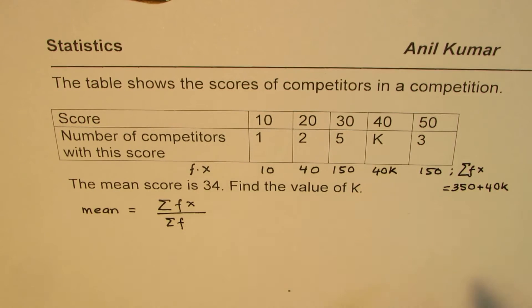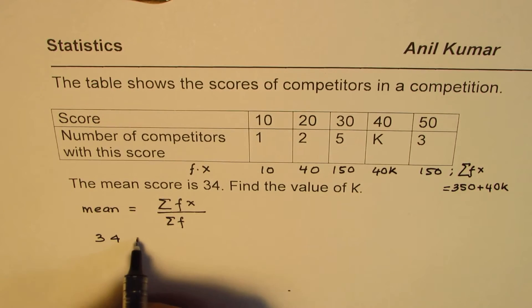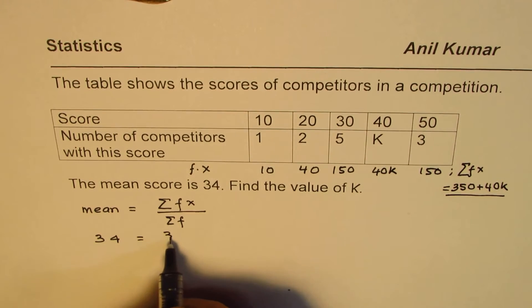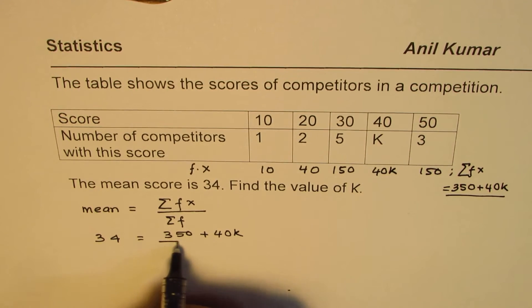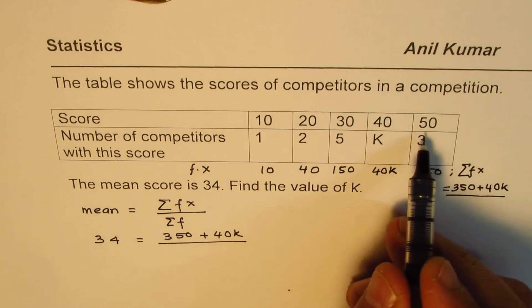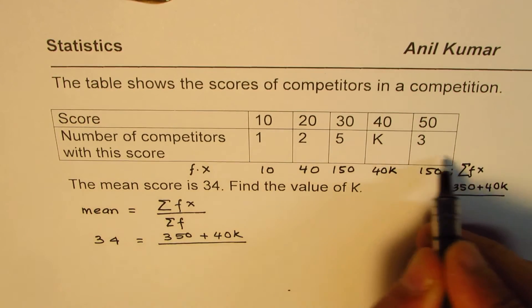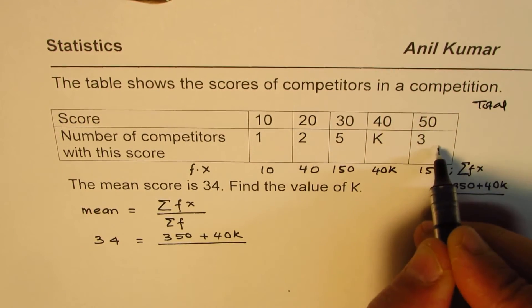So in this formula we can write mean which is given to us as 34 equals to that sum which we just calculated which is 350 plus 40K divided by the sum of frequencies. So sum of frequencies we can combine this.